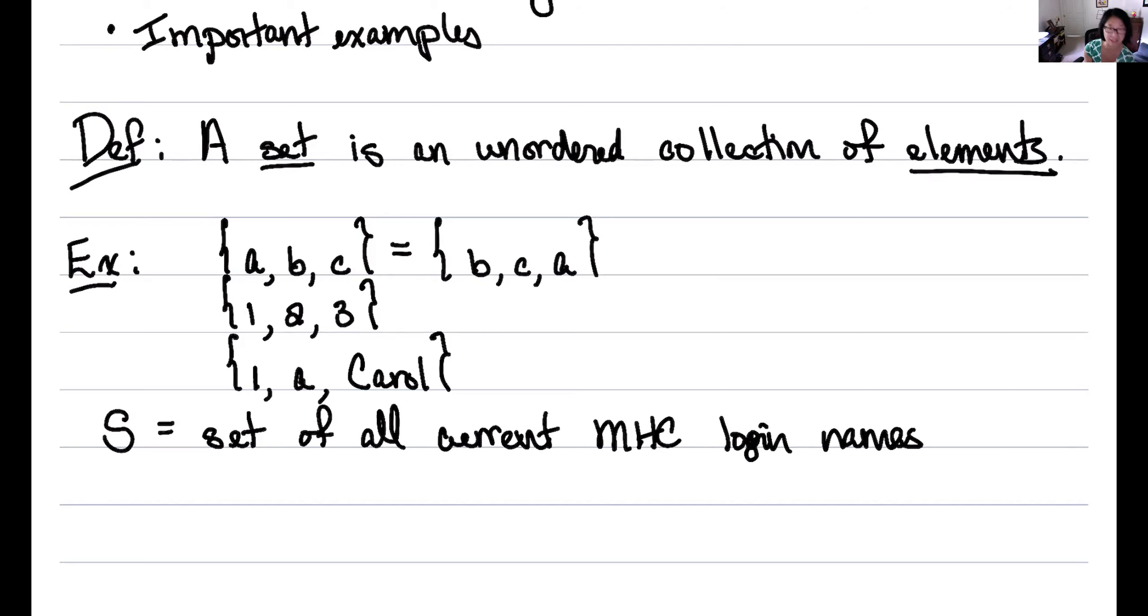Here's an example of a set that I can't write down where I can't write down all the elements because it's an infinite set. So I'll call this set L. And this set is the set of all points on the line with equation y equals x plus 1. So it's a set that I could draw a piece of that set, but I can't write down all of the elements because there are infinitely many of them.